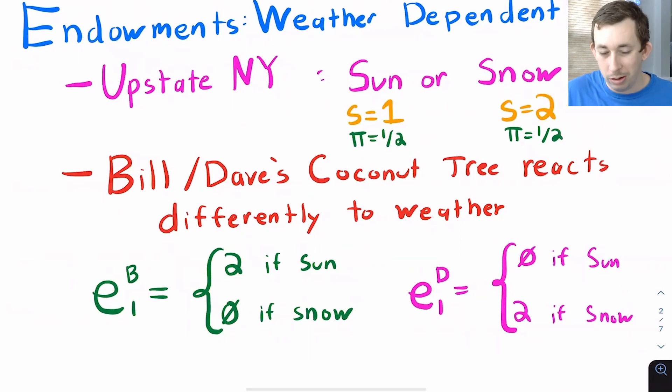Dave's tree only grows coconuts if it's snowy outside. So there's a 50% chance of it being sunny or snowy today. So Bill and Dave each have some uncertainty about what their endowment will be today, how many coconuts their tree is going to drop, and that amount is going to be based on the weather, but we should have two coconuts between the two of them in every period.